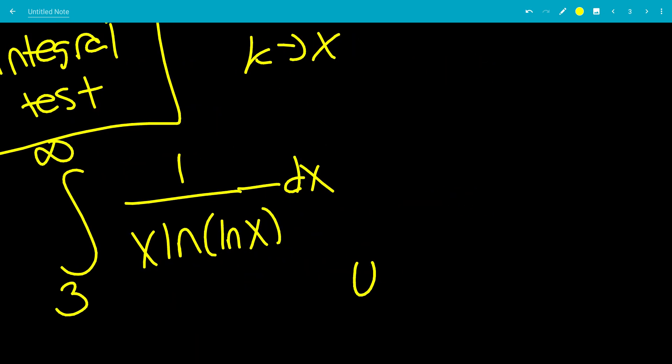So we'll do a u sub, so let u equal ln of x. We'll have du will be dx over x. So we can replace dx over x with du. When x equals 3, u will be ln of 3. When x is infinity, u will be infinity.